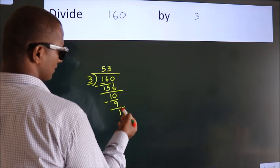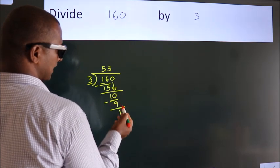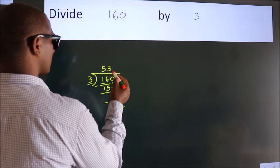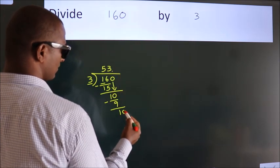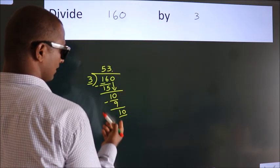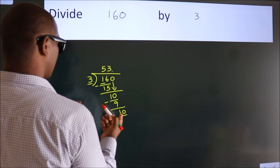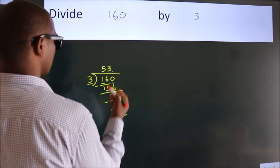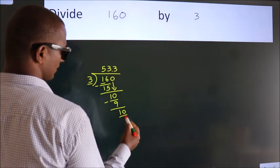After this, no more numbers to bring it down. So what we do is we put a dot and take 0. So 10. A number close to 10 in the 3 table is 3 times 3 equals 9.